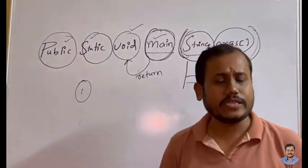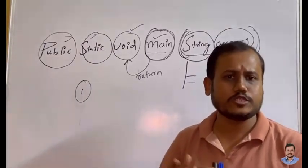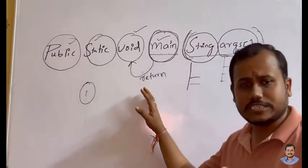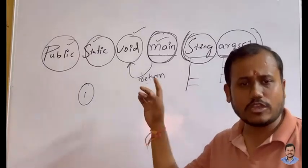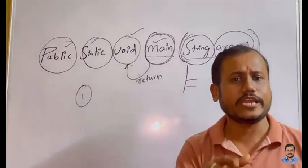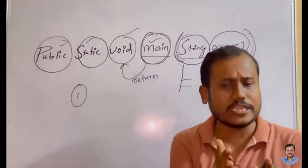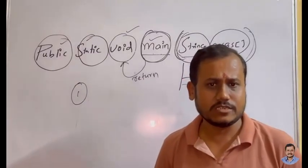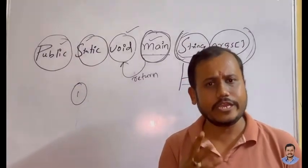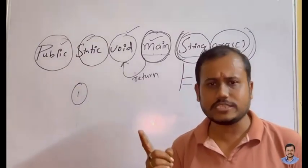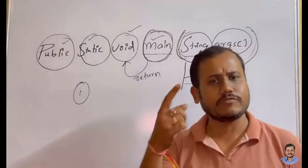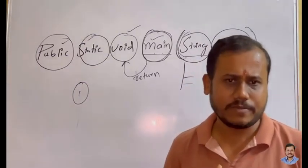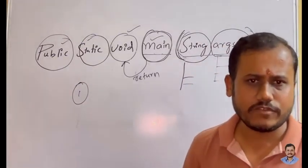You may say: create the object first, then execute the method. But if I create the object first, that means object creation is done without executing the main method — so the main method is executed after object creation, violating rule one. In the first case I violate rule two, in the second case I violate rule one. There is a controversy here.